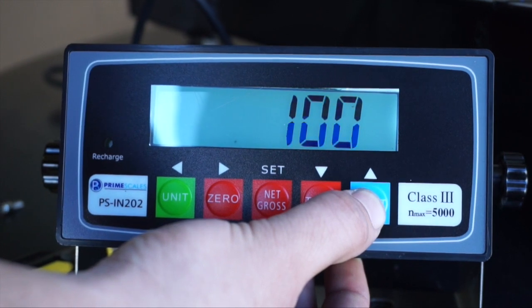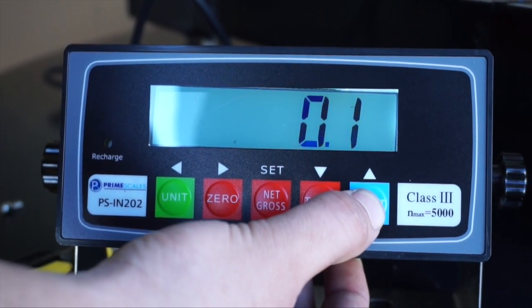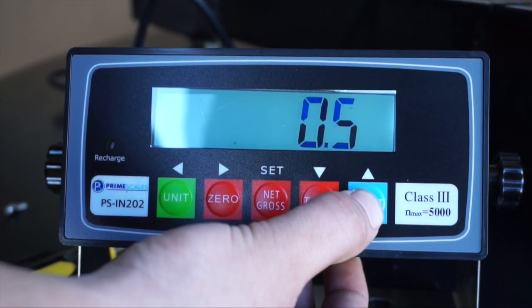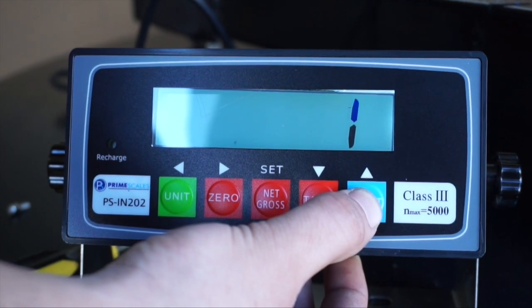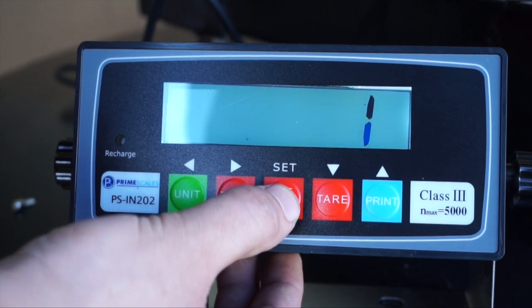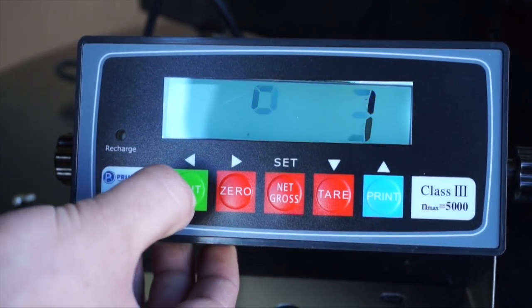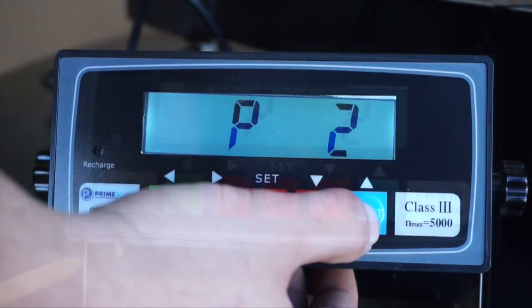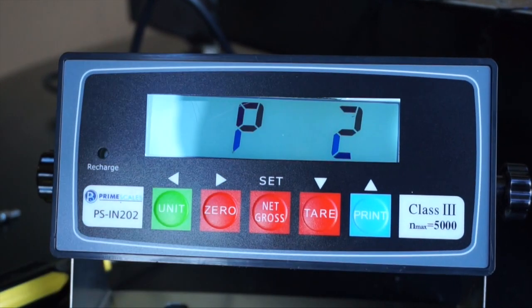With the print button, you can choose between 1, 2, 5, 10, 20, 50, 100, 0.1, 0.2 or 0.5 of a pound. We will set the accuracy at one pound for this scale. Save settings by pressing the net gross button. Press unit to return to parameter menu.